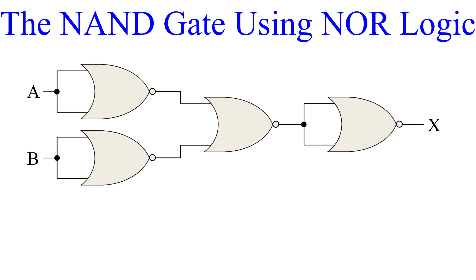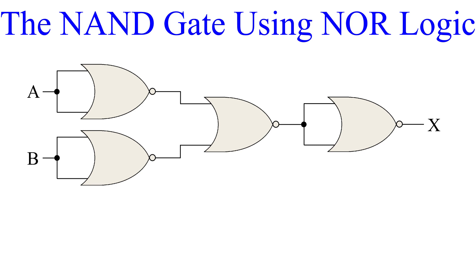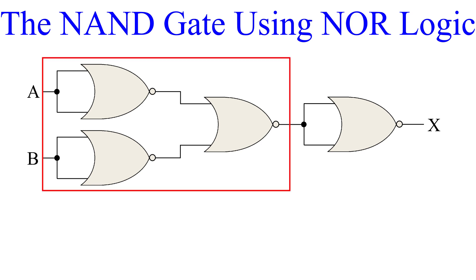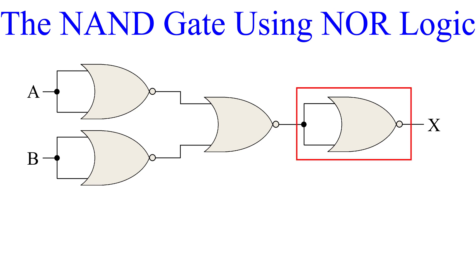Take a good look at it — do you recognize anything? Let's start at the end and work our way back. That last NOR gate is an inverter. Now, what do we need to invert to get the output of an AND gate? That's right, an AND gate. So if we shift our focus to the first three NOR gates, this is just the circuit for an AND gate. So to make a NAND gate using NOR gates, make an AND gate using NORs and then tack on an inverter at the end.